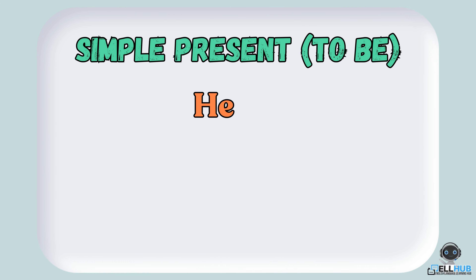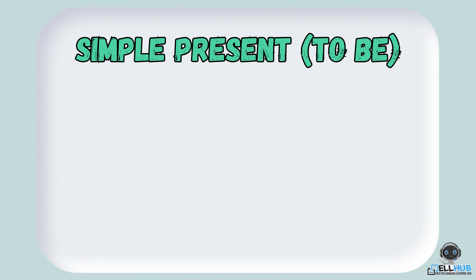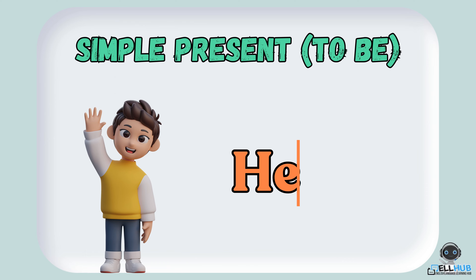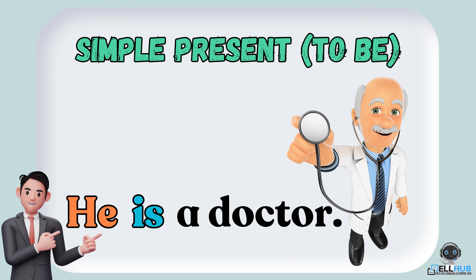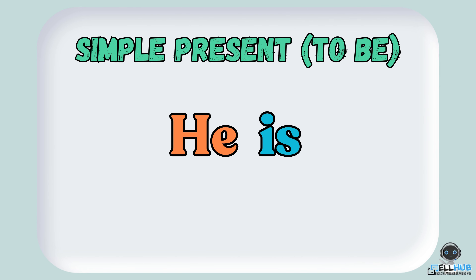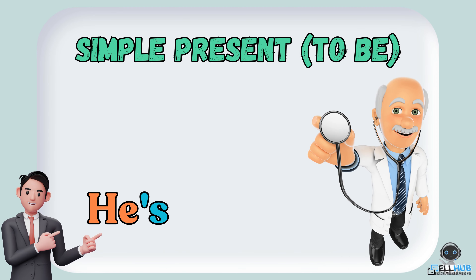He, she, and it take is. When the subject is he, we use is. For example: he is a doctor. In conversation, we often use the contraction he's, like he's a doctor.